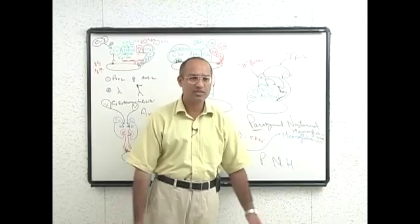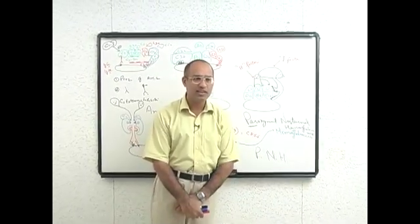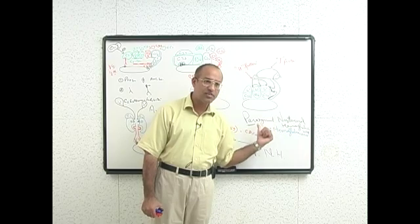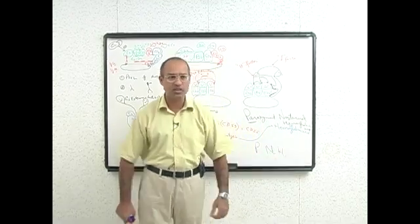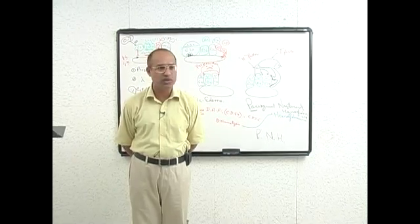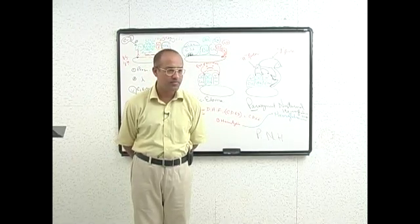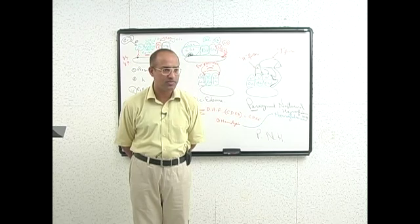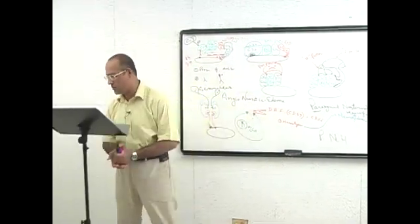When the disease was first discovered, these features — hemolysis at night and hemoglobinuria — were the most appreciated, so the name Paroxysmal Nocturnal Hemoglobinuria was given. Now you understand the pathogenesis of PNH. You can rewind the video to review if needed.